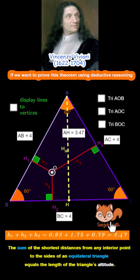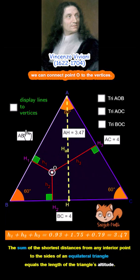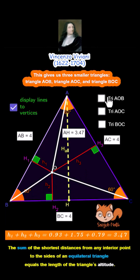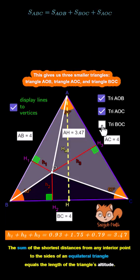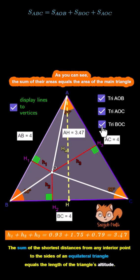To prove this theorem using deductive reasoning, we start by connecting point O to the three vertices of the triangle. This creates three smaller triangles: triangle AOB, triangle AOC, and triangle BOC. The total area of these smaller triangles is equal to the area of the original triangle.